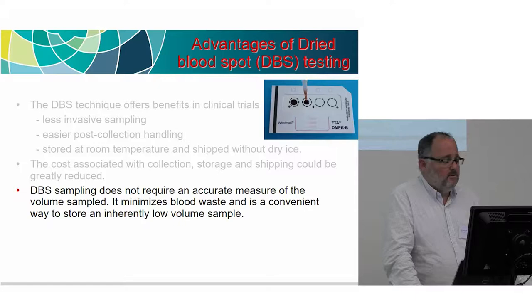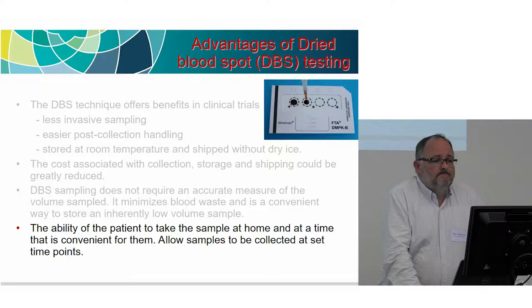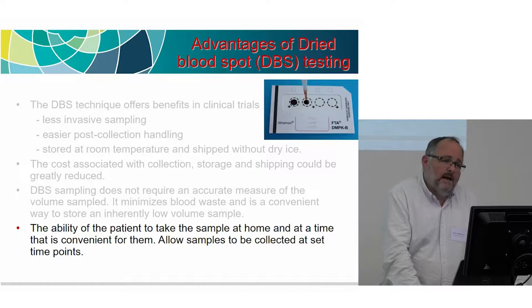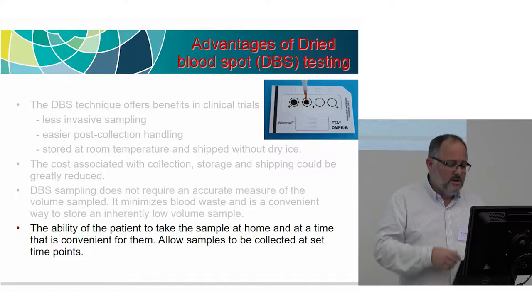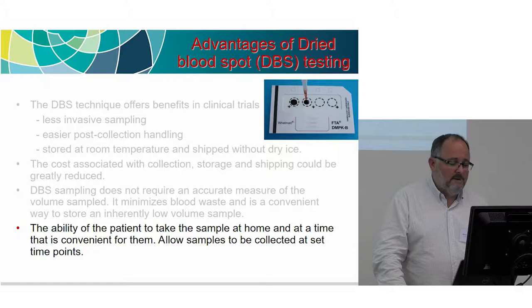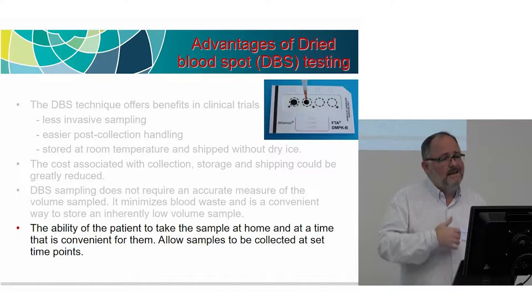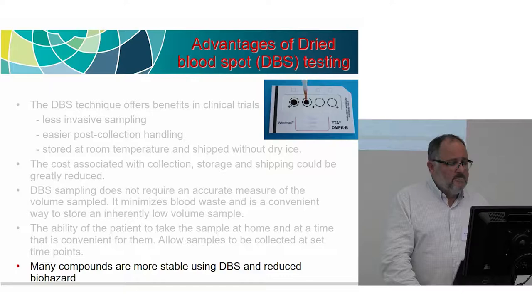With dry blood spots you don't need an accurate measure of the sample volume, you minimise the volume you're using, and it's a nice way to store long-term. For newborn screening we have to store samples for 28 years post-collection. If you're generating 60,000 to 70,000 samples per year and storing them for 28 years, you want a matrix where things are reasonably stable. Also, the patient can take samples at home — useful for area under the curve or timed collections, as seen with CAH monitoring to ensure children are adequately supplemented with hydrocortisone. Many compounds are reasonably stable once dried, and they present a reduced biohazard.